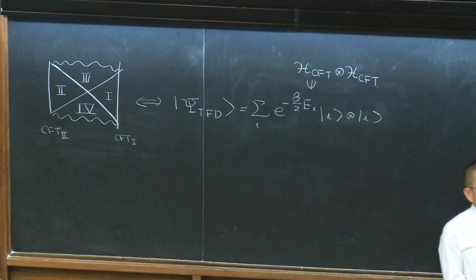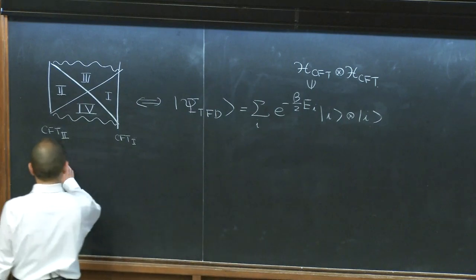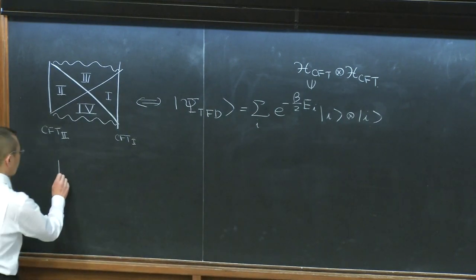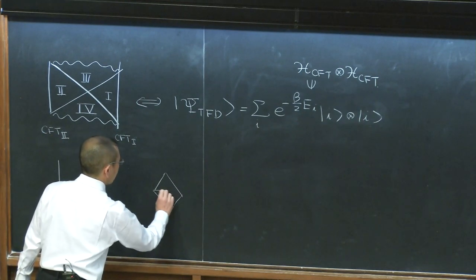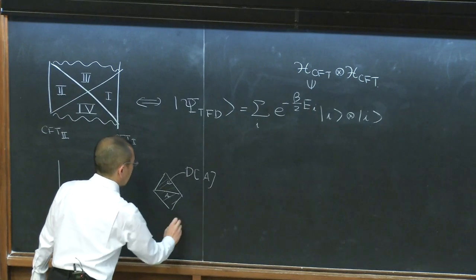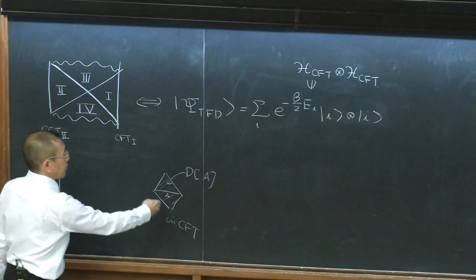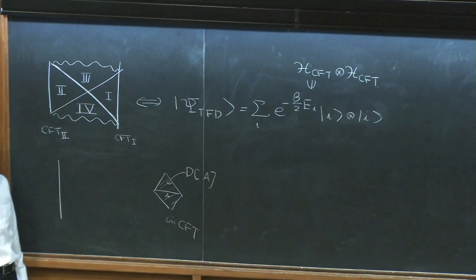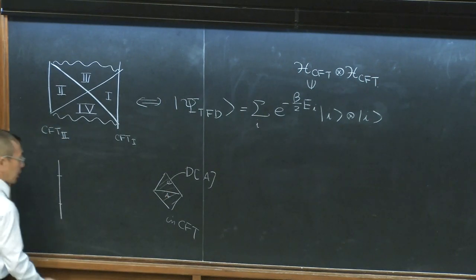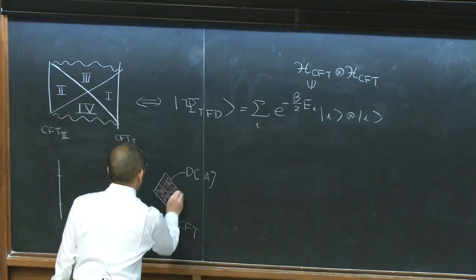I would also like you to remember the causal wedge reconstruction, or ADS-Rindler wedge reconstruction, that we discussed earlier yesterday. That is to say, if you have just one boundary, and if you have a causal domain on the boundary of some region A — so you have this causal domain A in CFT — suppose A is some part of the spacelike section of conformal field theory. You can draw the domain of dependence associated to this A and denote it D of A. So this is on the boundary of ADS.